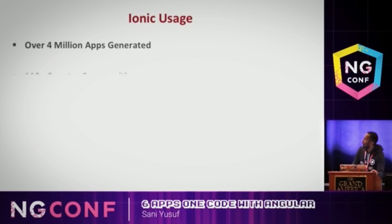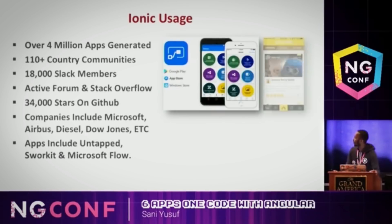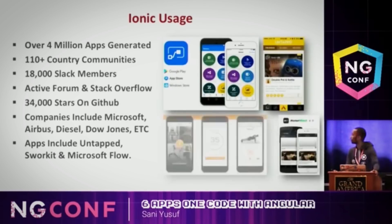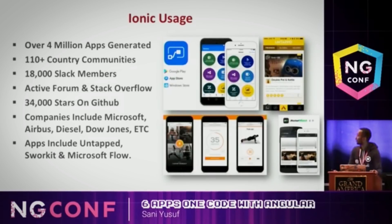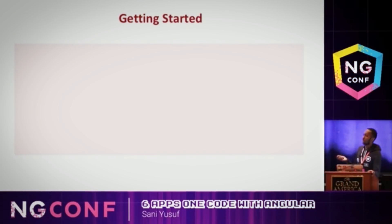Who's using Ionic? More than 4 million apps have been generated across 110-plus countries that have communities. Microsoft, Airbus, Diesel, Dow Jones, and many others all use Ionic, and these are some of the apps they've built.